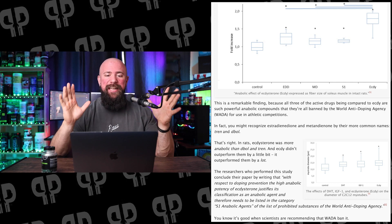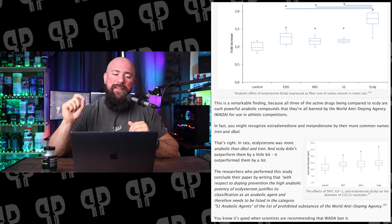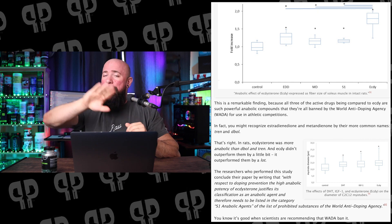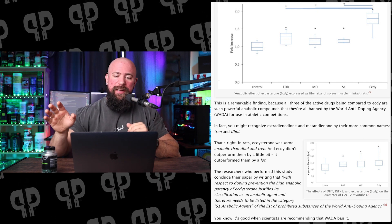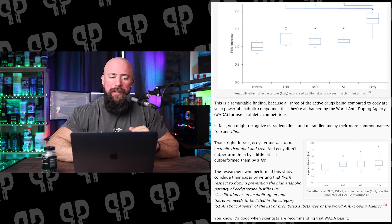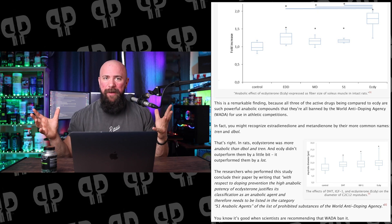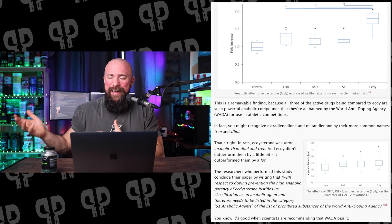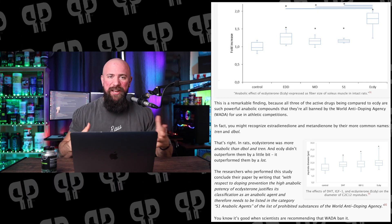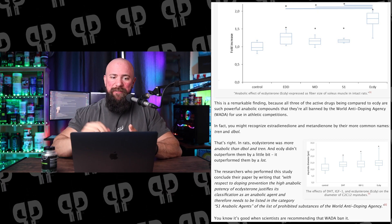The result was amazing: ectosterone outperformed all of the traditional anabolic drugs. Rats given ectosterone saw nearly a two-fold increase in the thickness of their soleus muscle — way above and beyond what Estradiendione, Methandienone, and SARM-S1 were capable of achieving. These are super powerful anabolic drugs that any experienced gym-goer or researcher in this field would know are incredibly strong. They're all banned by WADA and plenty of different federations, and yet Turkesterone isn't banned yet.